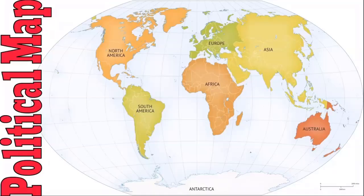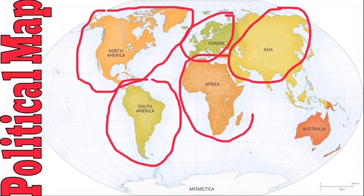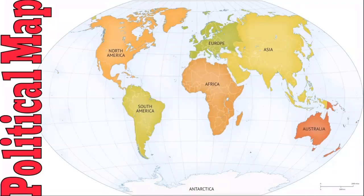The first thing we're going to review is the political map. With this map, the color changes are what's really key. North America is orange, South America is green, Europe is green, Asia is yellow, Africa is orange, Australia is a red type of color, and Antarctica is white. You have the seven different continents with different colors and borders — you can see the borders here.